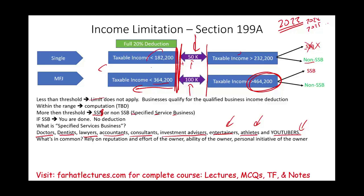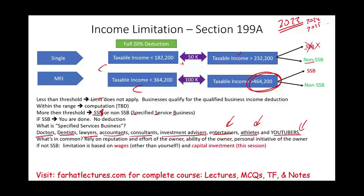If not SSB, limitation is based on W-2 wages paid to others and capital investment — and that's what we will discuss in this session. Bear in mind: engineers and architects are not considered SSB businesses. The IRS or Congress decided that. So they're not SSB businesses — just in case you get a multiple choice question, even though you might think they are SSBs.